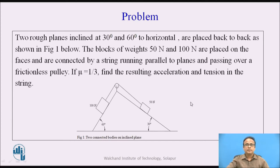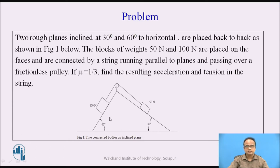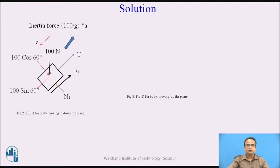By looking at the figure, we can say that the 100 N block is trying to move downward, which is connected to the 50 N block. The 50 N block is trying to move in the upward direction while the 100 N block is trying to move in the downward direction, as the inclination of this surface is more and the weight is also more. First of all, consider the free body diagram for the body which is moving down the plane.